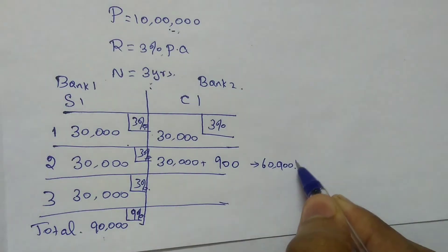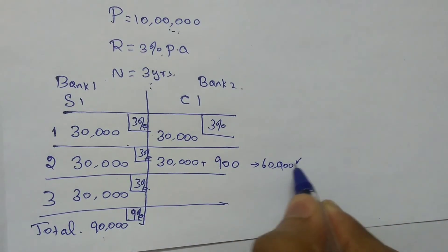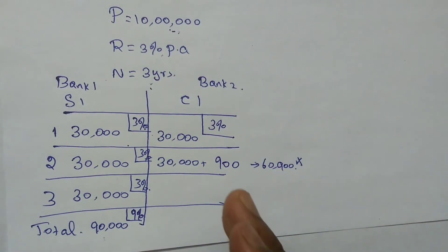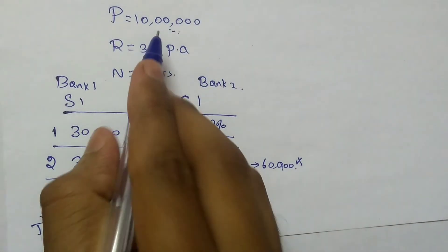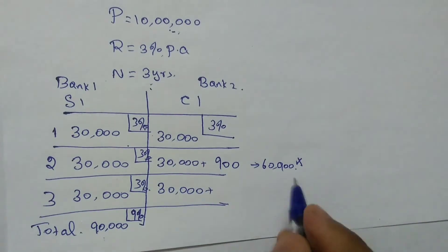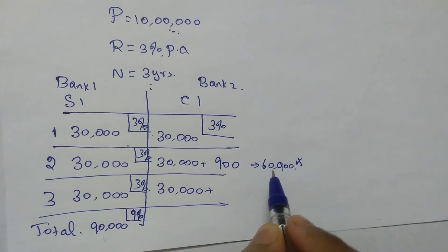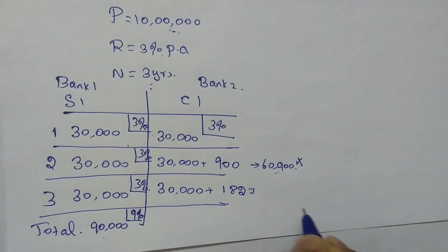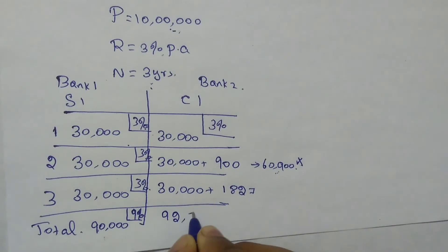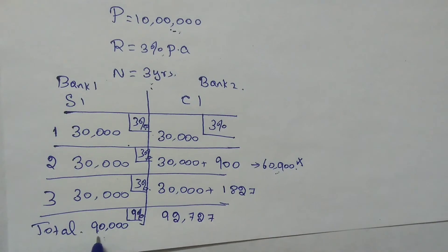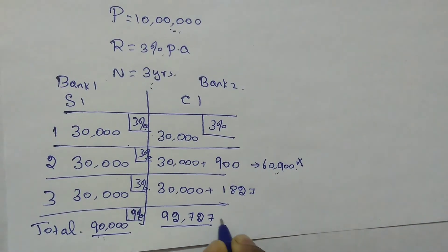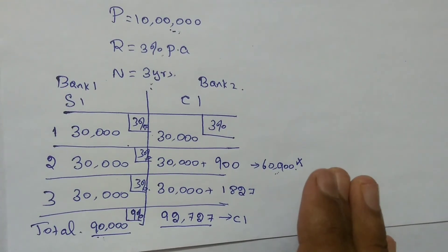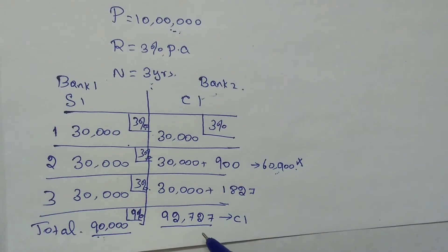If you pay 60,900 at the end of two years, it will not have any impact on the third year. But if you don't pay the 60,900, moving to the third year, once again you have to pay 3% of 10 lakh which is 30,000 rupees, plus the outstanding 60,900 from up to the second year now attracts another 3%, which is 1,827 rupees. So totally you have to pay 60,900 + 30,000 + 1,827 = 92,727 rupees. In simple interest you pay only 90,000, but in compound interest you pay 92,727. This 92,727 is the compound interest. The total amount to settle with the bank at the end of three years is 10 lakh + 92,727 = 10 lakh 92,727 rupees.